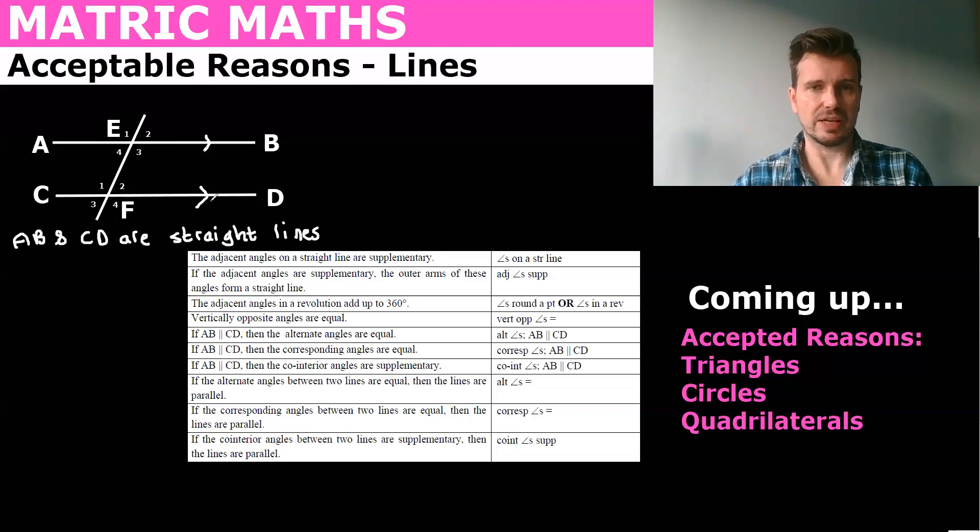So angles on a straight line are supplementary. So what does that mean? Angles on a straight line 180 degrees. So we can say then if we were given this and you needed to say that these two sum to 180 you'd say E1 plus E2 equals 180 degrees and you're going to just say angles on a straight line. And you see we don't need to write out straight and we don't need to write out angles. We can just abbreviate it.